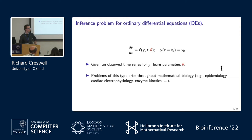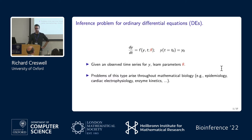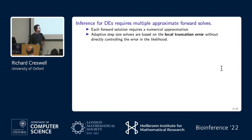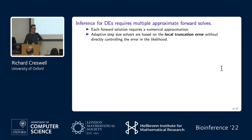We usually solve this problem by imposing some kind of likelihood. The classical approach would be to maximize that likelihood. The Bayesian approach would be to additionally specify a prior and infer the posterior distribution of the parameters. I'll assume that's fairly standard to this audience. I want to open the talk with a couple of the key challenges that this problem has versus inference problems not involving differential equations.